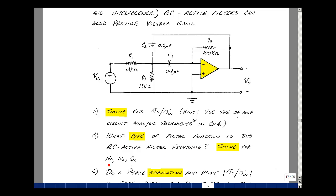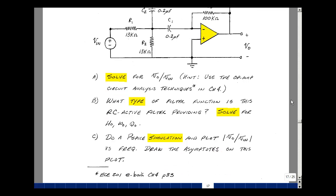Then solve for H naught, omega naught, and Q naught. Lastly, do a PSPICE simulation and plot the magnitude of Vout over Vin versus frequency, then draw the asymptotes on this plot.